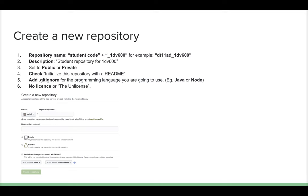Write a short description, perhaps 'student repository for 1db600'. Then set the repository to public or private. Check 'Initialize this repository with a README file' and add a gitignore for the programming language you're going to use — Java, Node, etc. — to make sure unwanted files don't end up in the repository.